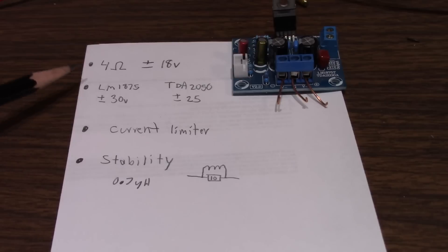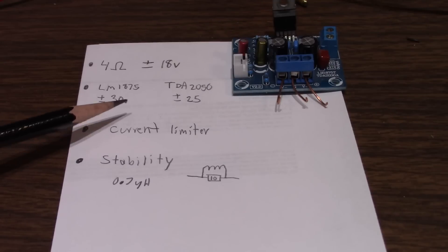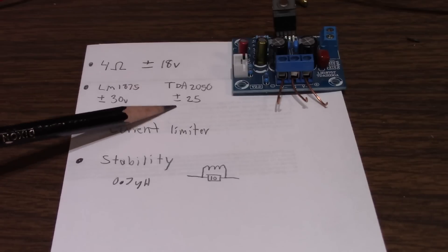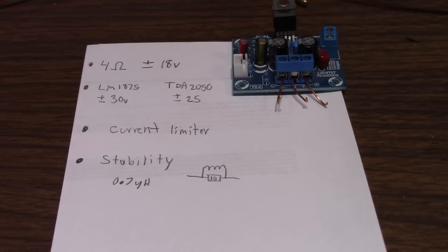Now there's one way you can actually get more power from the LM1875 using 8 ohm loads is, well, it has a higher maximum supply voltage limit, 60 volts or plus minus 30 volts, whereas the TDA2050 is only 50 volts or plus minus 25 volts.